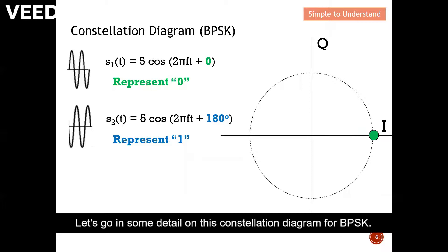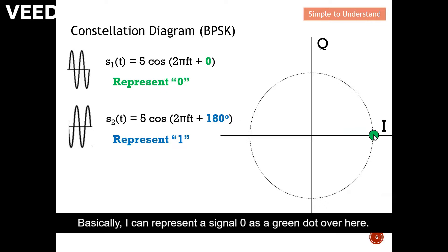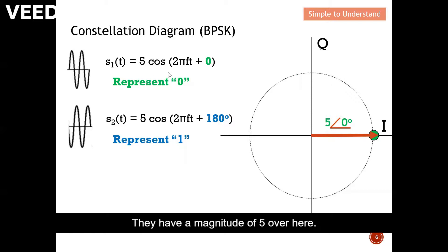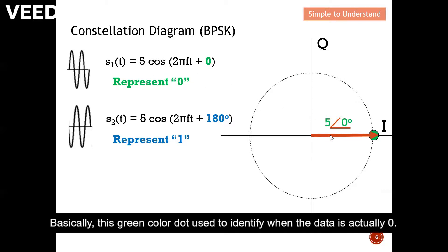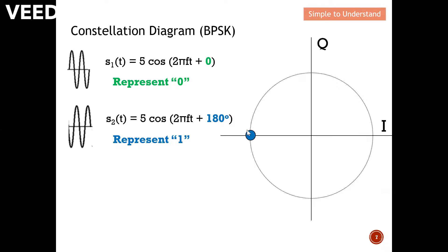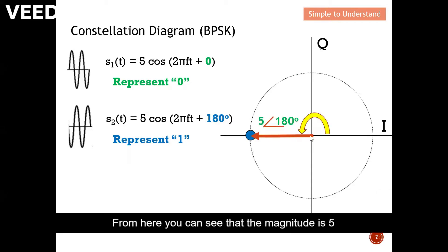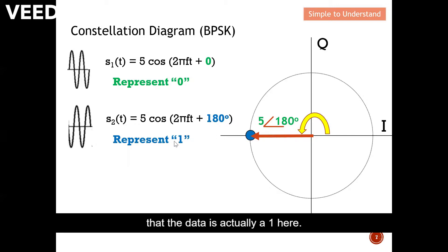In the BPSK constellation diagram, when the digital data is zero, I use this equation: it has a phase shift of zero and a magnitude of five. I represent this as a green dot, with magnitude five and phase shift zero. When the data is one, I use a blue dot — the amplitude is five and the phase shift is 180 degrees. So the magnitude is five and the phase shift is 180 degrees.